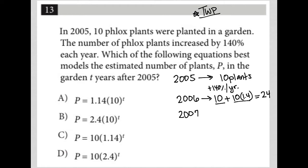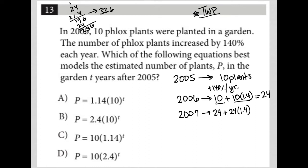Let's go to 2007. I'm starting off with 24 plants from the previous year, but then I'm adding 24 times 1.4, which is 140%. I can work that out on the side: 24 times 1.4 equals 33.6. Adding that to the 24 I already had gives me 57.6. So in the year 2007, I have 57.6 plants.